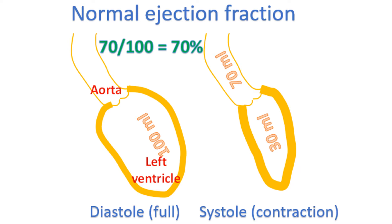In heart failure with reduced ejection fraction, it is below 40%. Some persons have a stiff left ventricle due to disease, which cannot relax and fill well. They have a normal ejection fraction, typically above 50%. This is heart failure with preserved ejection fraction, in simple terms.